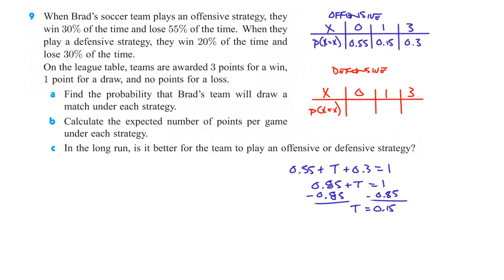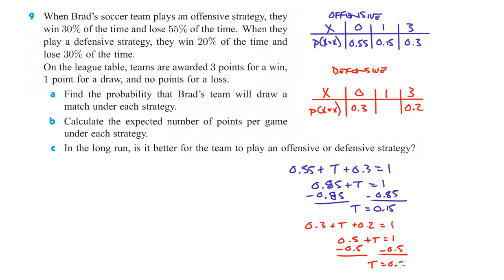Under the defensive strategy they win 20% of the time — probability 0.2 — and lose 30% of the time — probability 0.3. We need to figure out the tie probability: 0.3 plus T plus 0.2 must equal 1, so 0.5 plus T equals 1. Subtracting 0.5 from both sides gives T equals 0.5. So that handles part A — the draw probabilities under each strategy.